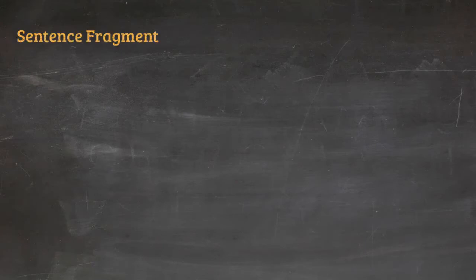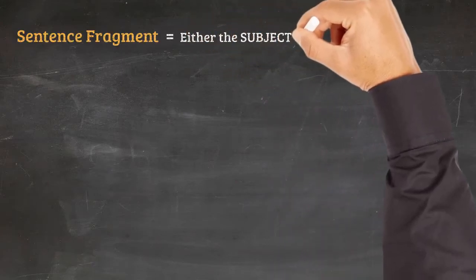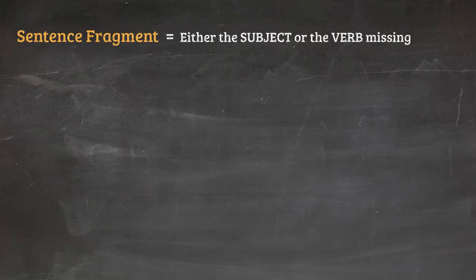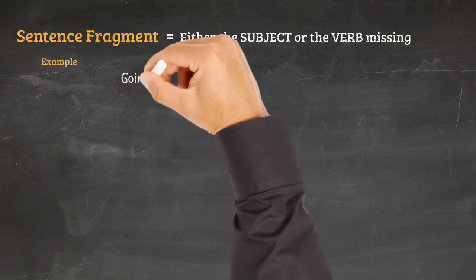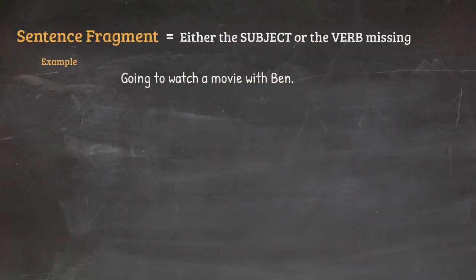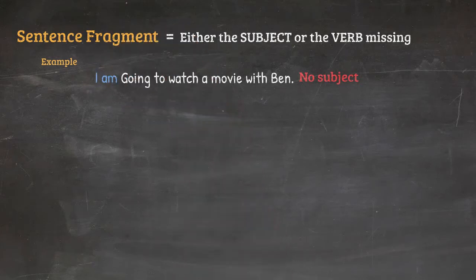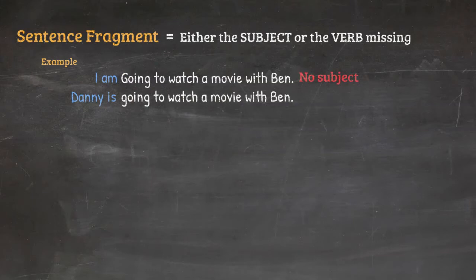A sentence fragment happens when either the subject or the verb is missing from the sentence. For instance, 'going to watch a movie with Ben' — here we don't have a subject. Who is going to watch a movie with Ben? We would need to say 'I'm going to watch a movie with Ben,' or 'Danny is going to watch a movie with Ben,' or 'we are going to watch a movie with Ben.'